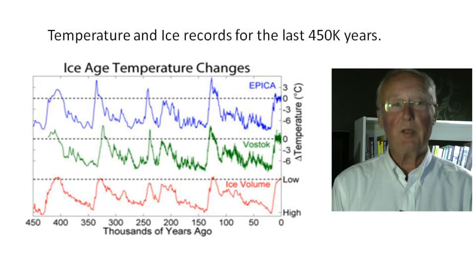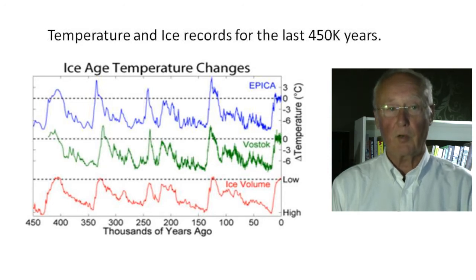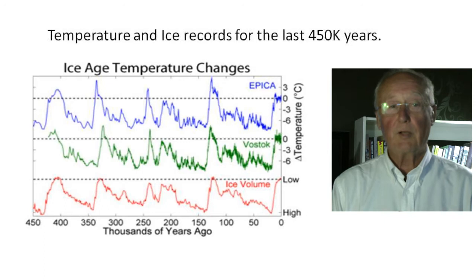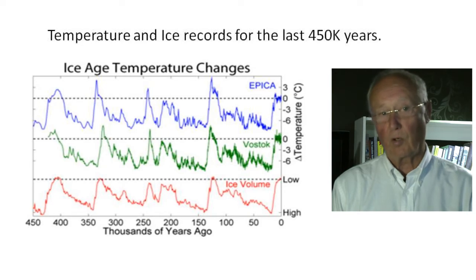Everyone now understands that temperature has cycled over the centuries. The blue graph at the top is the EPICA, the European project for ice coring in Antarctica, a research team's record taken from ice cores reaching back 450,000 years. The green graph below is the Russian version from Vostok, which is also in Antarctica. The red graph at the bottom is the record of ice volumes, but it could just as easily be labelled sea level height, as when the ice melts sea levels go up, or conversely when the water freezes sea levels drop.